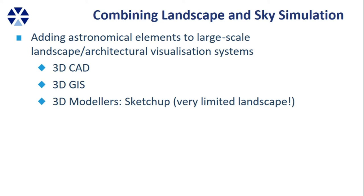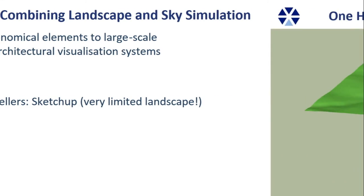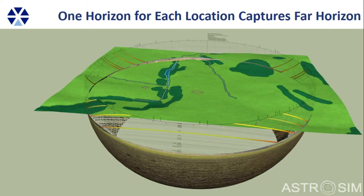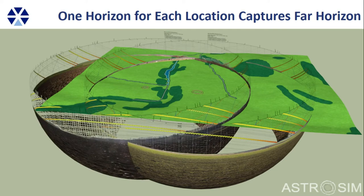We can combine and add astronomical elements into existing architectural visualization systems. For instance, in SketchUp with a terrain model and interesting sites, the terrain is limited — you can't map mountains far away. You can make a panorama photograph to enclose yourself, but if you change the site even a few steps, you need another panorama photograph. If you need more than one viewpoint, you have to make so many panoramas it becomes tedious. There should be better means.